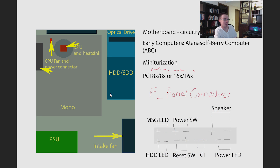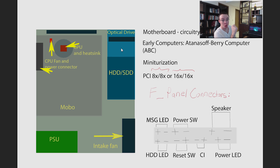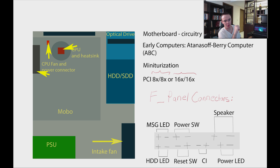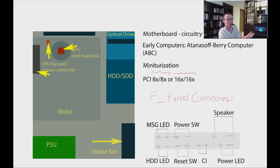Have you ever heard about or seen one of the very first computers? When we say first computers, what's the first year that pops in your head? Probably somewhere between 1960 and 1980, right? The first digital computing device was called the Atanasoff-Berry Computer, or ABC. The idea for it originated in 1937 and became a reality in the early 1940s. It wasn't a computer like the ones we're used to — it was designed for linear programming problems and used a paper card for data storage, which wasn't very reliable.